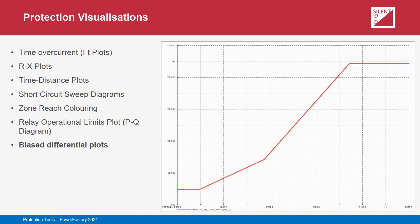The behavior of differential relays can be monitored using biased differential plots. Differential characteristics showing the restraint and operate regions of the relay on a stabilizing current versus differential current plane can be plotted. Additionally, phase comparison plots on a complex plane can be plotted for relays employing this particular technique.